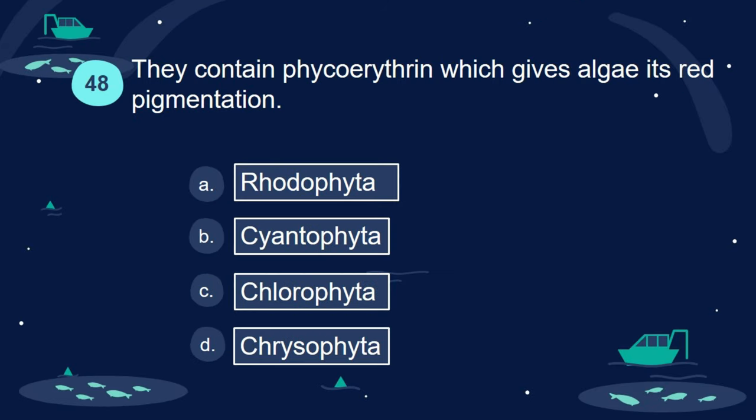Question 48. They contain phycoerythrin which gives algae its red pigmentation. A. Rhodophyta. B. Phaeophyta. C. Chlorophyta. D. Chrysophyta.